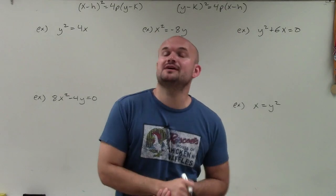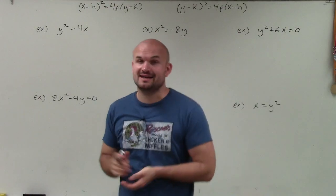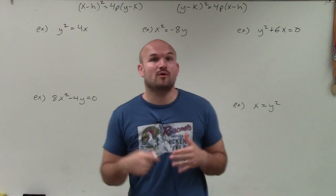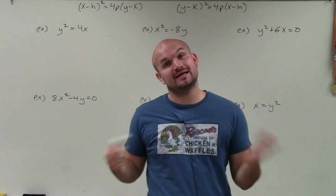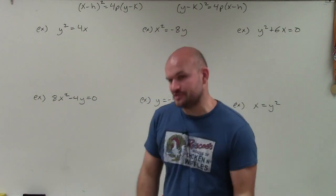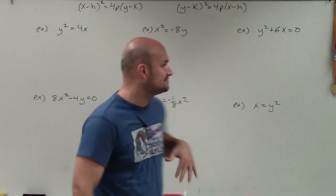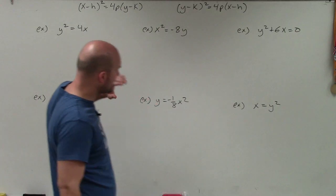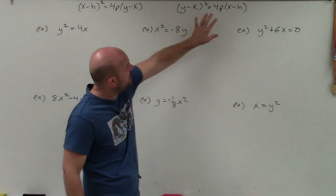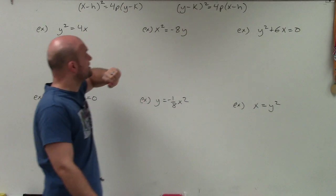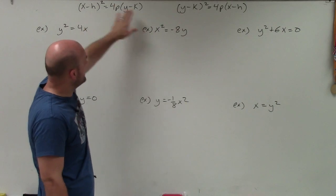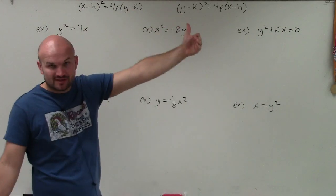Welcome, ladies and gentlemen. What I'd like to do is show you how to find the directrix as well as the focus for a parabola in conic sections when the vertex is at (0, 0). You can see that the vertex is at (0, 0). I have two written equations in conic section form, where h and k represent the vertex.